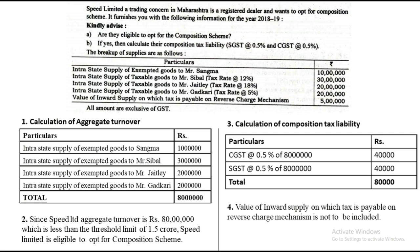Calculation of composition tax liability for Speed Limited: CGST at 0.5% of 80 lakhs = rupees 40,000. SGST at 0.5% of 80 lakhs = rupees 40,000. Total tax liability = rupees 80,000. The value of inward supply on which tax is payable on reverse charge is not included. With that, our second sum is also done. I hope everyone is clear with this chapter on composition levy under GST. Stay tuned for more videos in our series. Thank you.